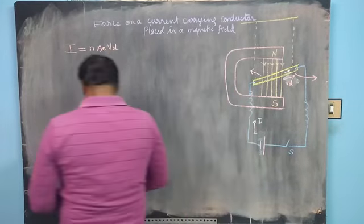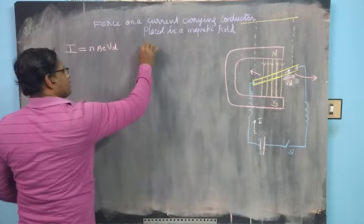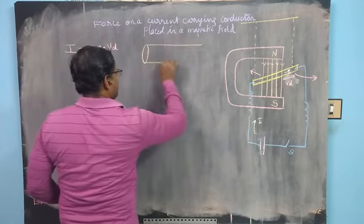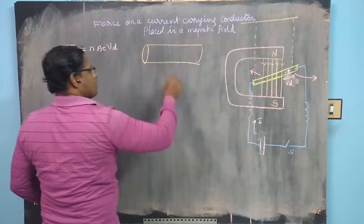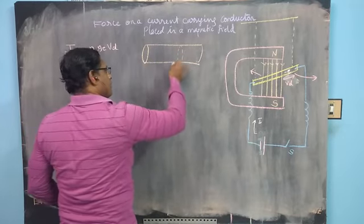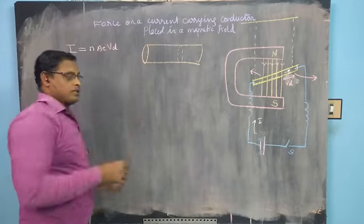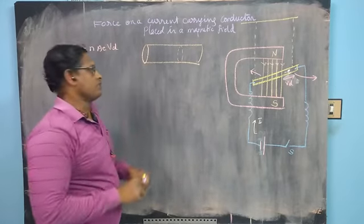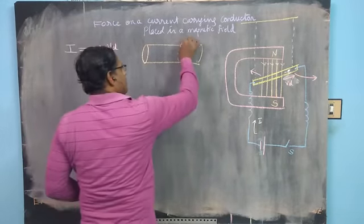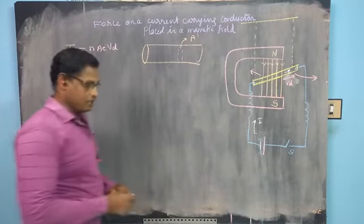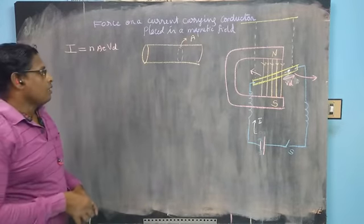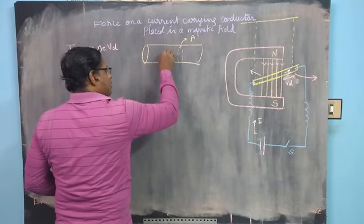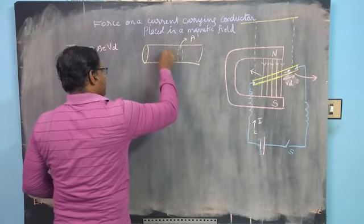Consider this conductor — I draw it here. In the conductor, this is the area of cross section of the conductor. This is the area of cross section, represented as A. If the electron flows here, you consider this is the charge of the electron q, which is minus e.